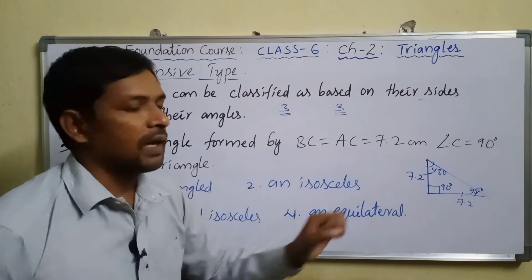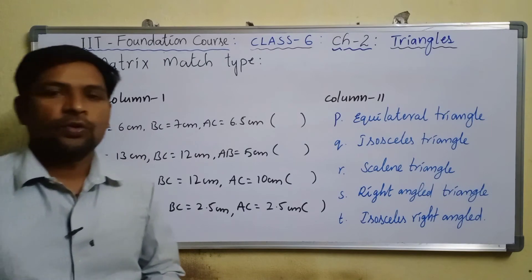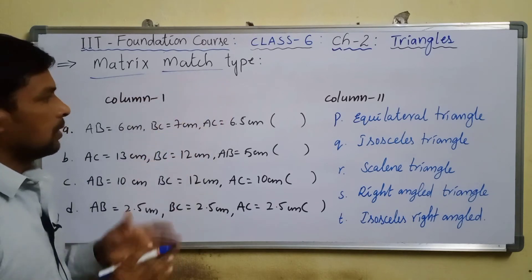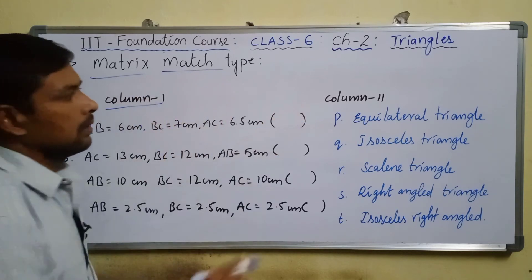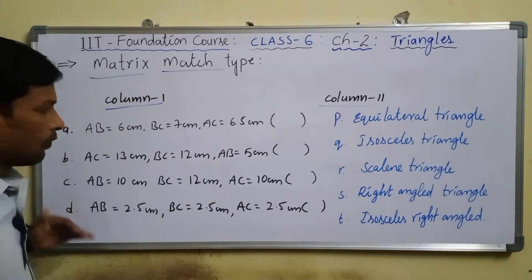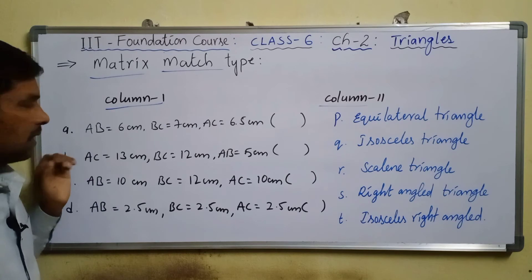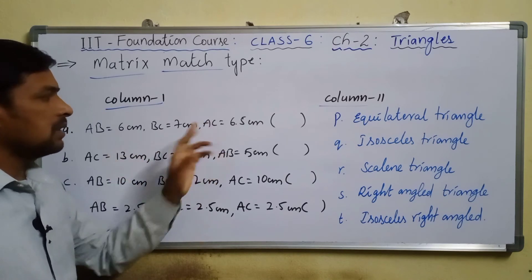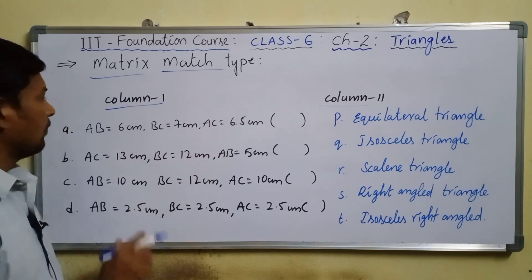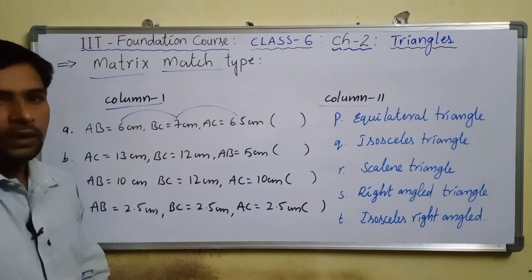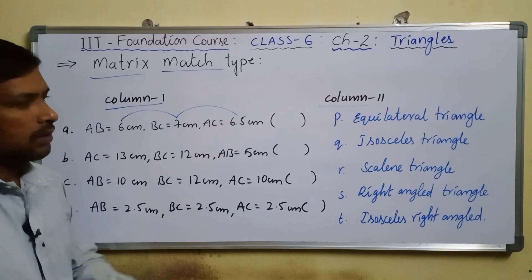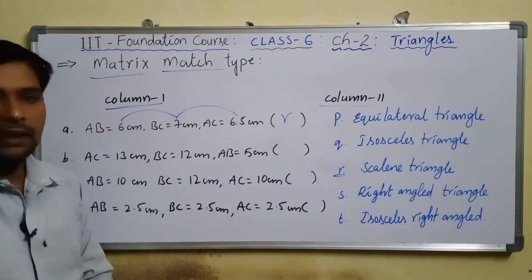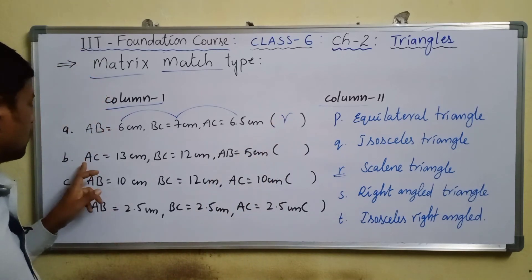Now for matrix match type: Column 1 lists triangle measurements and Column 2 lists triangle types. Item A: AB = 6 cm, BC = 7 cm, AC = 6.5 cm — three different sides — this is a scalene triangle, matching option R.